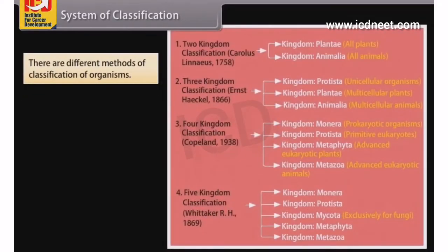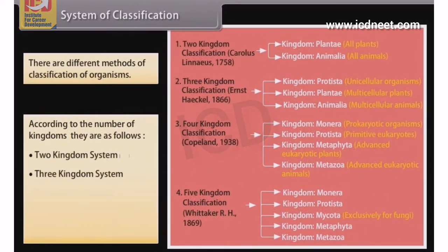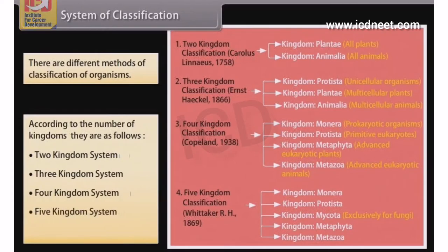There are different methods of classification of organisms. According to the number of kingdoms, they are as follows: the 2 Kingdom System, 3 Kingdom System, 4 Kingdom System, 5 Kingdom System, and 6 Kingdom System.